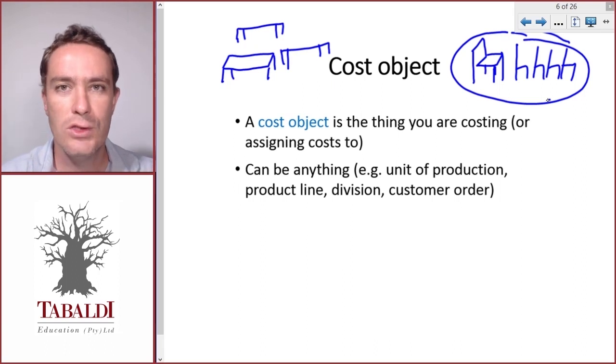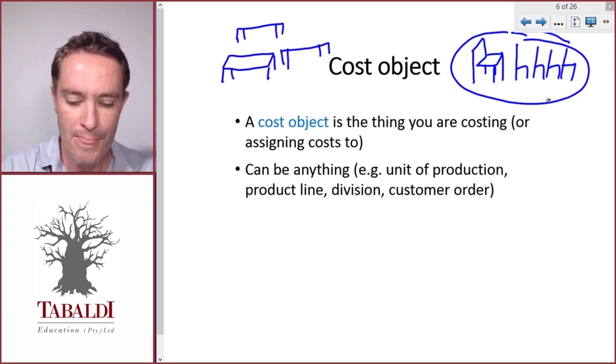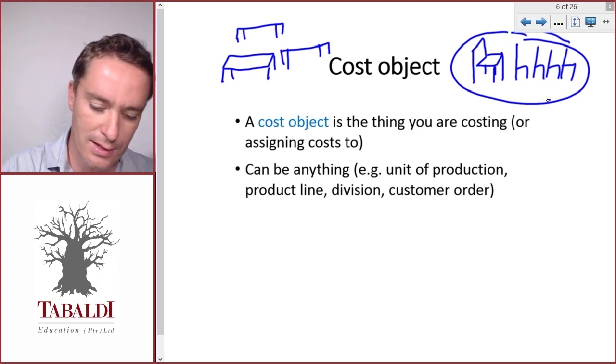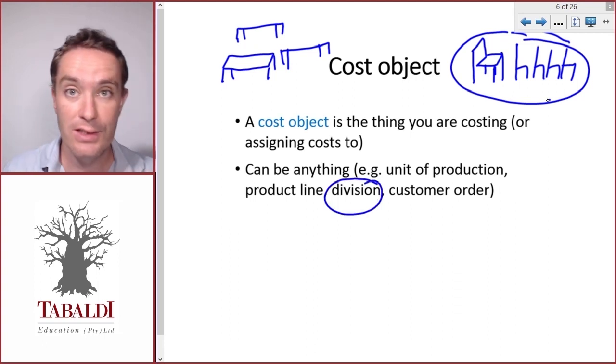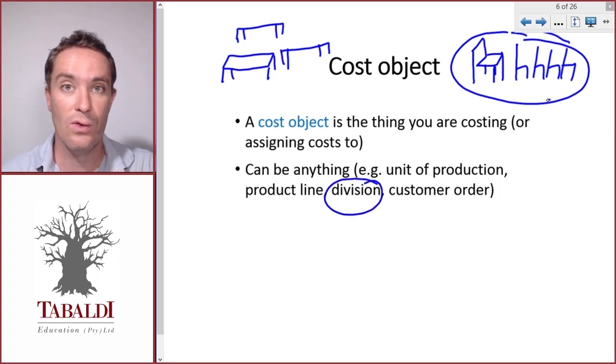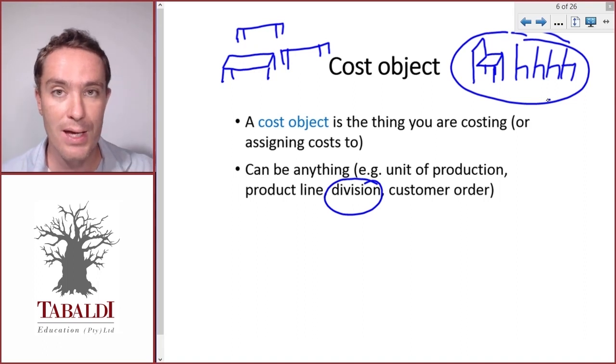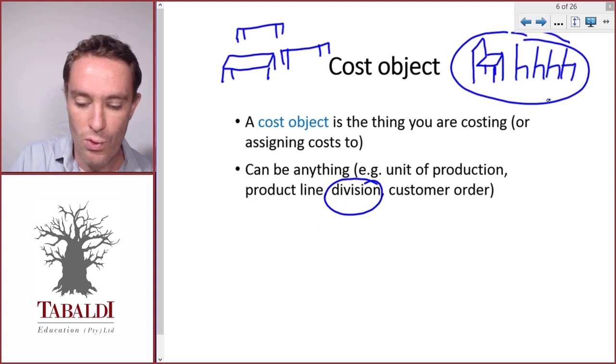A cost object could also be a division—the woodwork division, for example. If she makes stuff with steel, the woodwork division could be a cost object, encompassing all the costs that went into the woodwork division for a specific period.